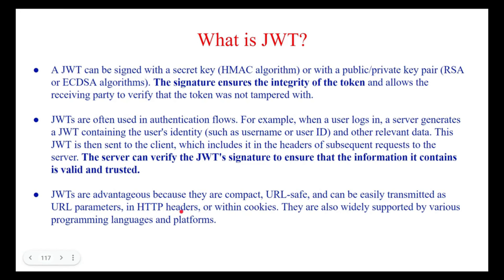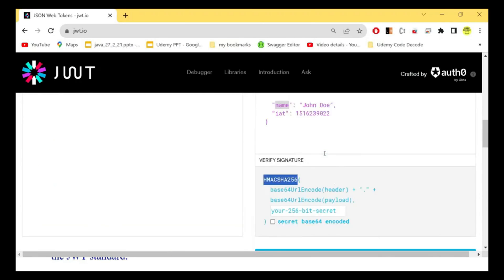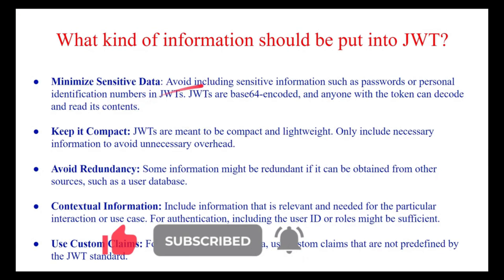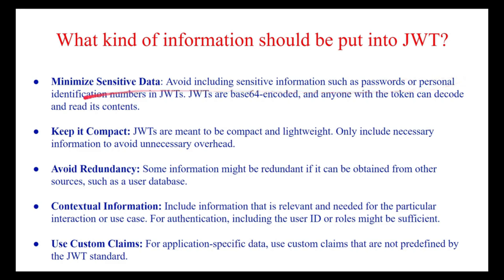Why do we use JWT tokens? Because they are compact and easily transmitted in HTTP headers, URL parameters, or within cookies. An important consideration: since JWTs use Base64 encoding, they can be easily decoded by anyone. Therefore, you should avoid placing sensitive information such as passwords or personal ID numbers in the JWT header or payload claims, as anyone can decode and read the content.